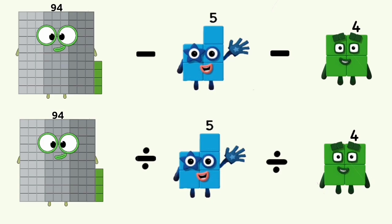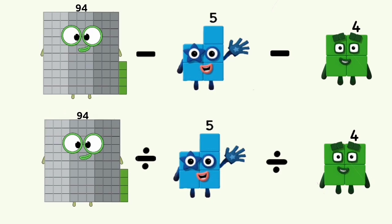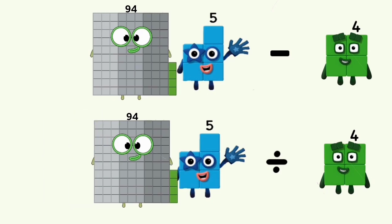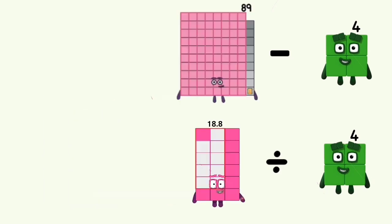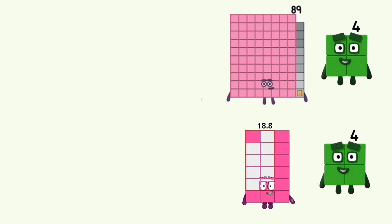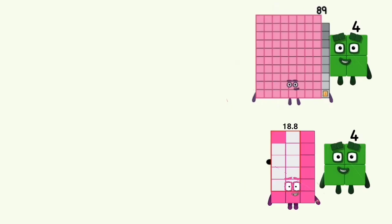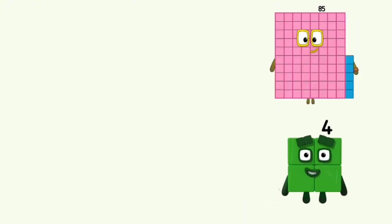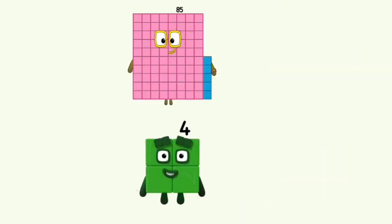94 minus and divided by 5 equals 89 and 18.8. 89 minus 4 and 18.8 divided by 4 equals 85 and 4.